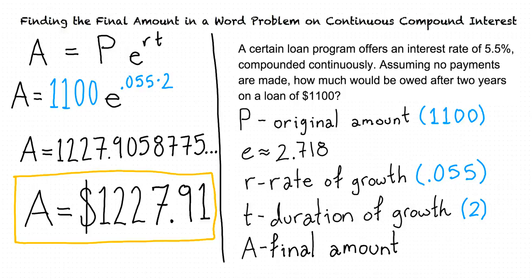Awesome. So to find the final amount in a word problem on continuous compound interest, we plug the known values into the equation for continuous exponential growth and then evaluate the final amount. That's right. Nice job.